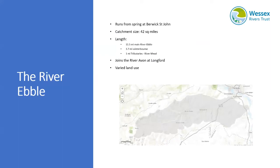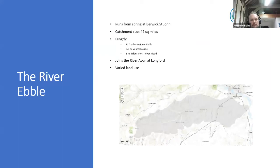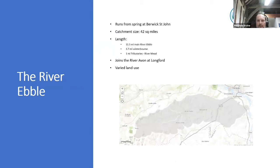The River Ebble is a small, approximately 22km, tributary of the Hampshire Avon. The river rises from springs at Berwick St John and flows east through the villages of Ebsbourne Wake, Fifield Bavent, Broadchalk, Bishopstone, Coombe-Bissett, Hommington, Oddstock and Nunnton, joining the River Avon at Bowdenham within the Longford estate.